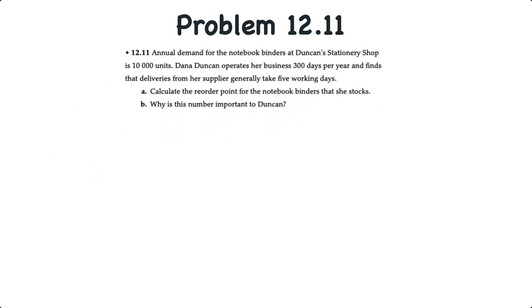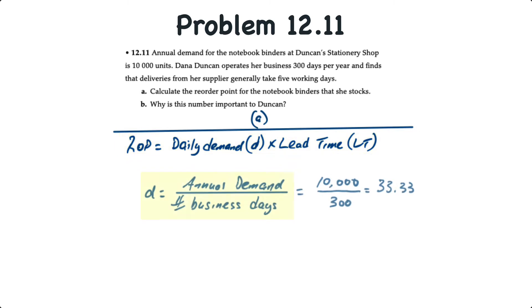The formula for reorder point is daily demand or little d times lead time or LT. Little d daily demand is determined using the annual demand or big D divided by the number of business days. So the daily demand is equal to 10,000 units annually divided by 300 business days or 33.33 units per day. The lead time we know is five.